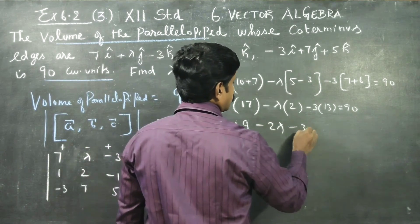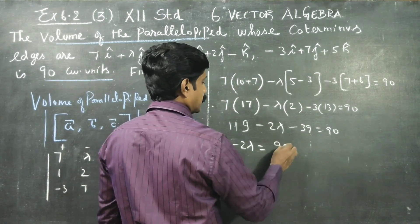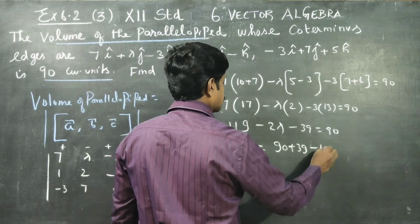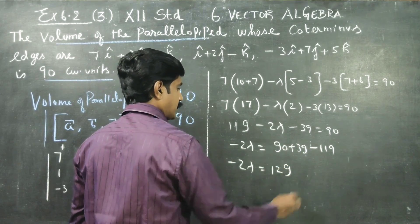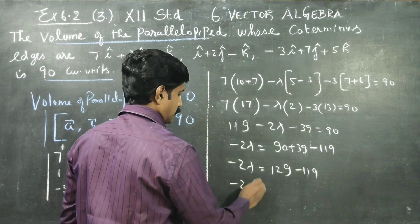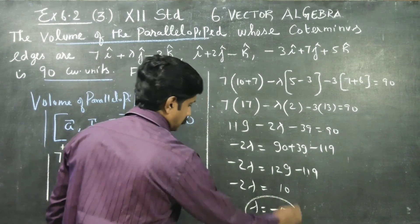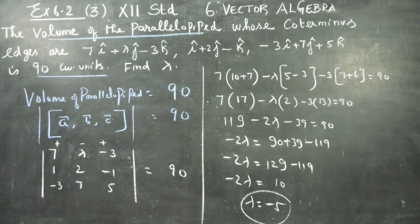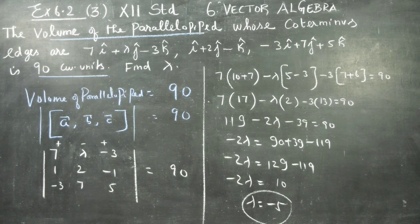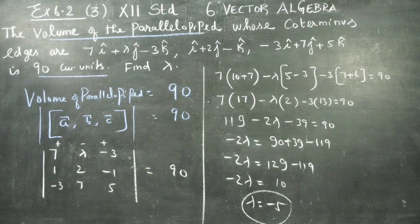Minus 2 lambda minus 39 is equal to 90. Minus 2 lambda is equal to 90 plus 39 minus 119. Minus 2 lambda is equal to 129 minus 119, which gives minus 2 lambda equals 10. Therefore, lambda is equal to minus 5. Lambda equals minus 5 is your final answer. They are asking us to find the value of lambda. Just use the formula: Volume of parallelepiped equals scalar triple product of A, B, C. Use the value of lambda equals minus 5. Thank you.